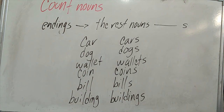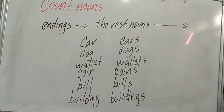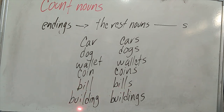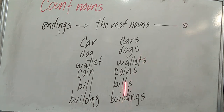Now, what happens with the rest of the nouns? Most other nouns — those that don't have those special endings — simply add -S at the end to pluralize. For example: car → cars, dog → dogs, wallet → wallets, coin → coins, bill → bills, building → buildings. These don't have the different endings we analyzed before, so just add -S and that's it.